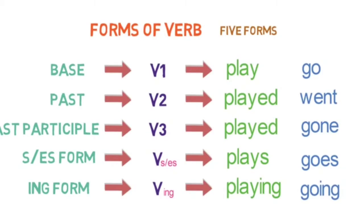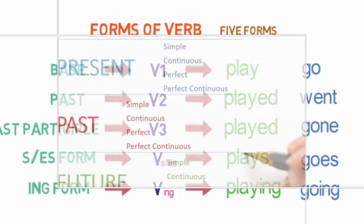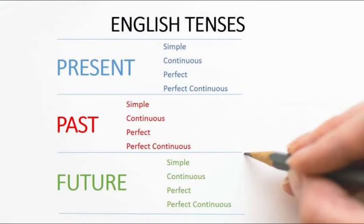So children, now I think you must be clear about the verb forms. Let's move on to the tenses. In English we have 12 tenses. Tense is the grandfather, and it has three children: present tense, past tense, and future tense. Each parent has its own children with the same names: present simple, present continuous, present perfect, and present perfect continuous.